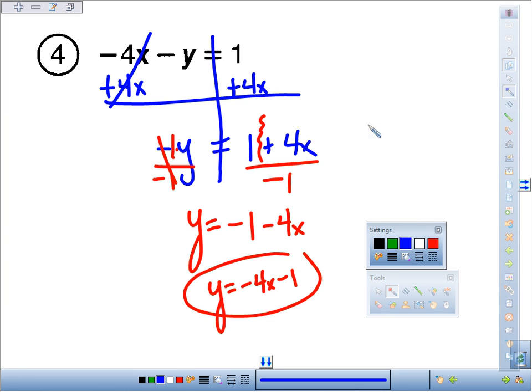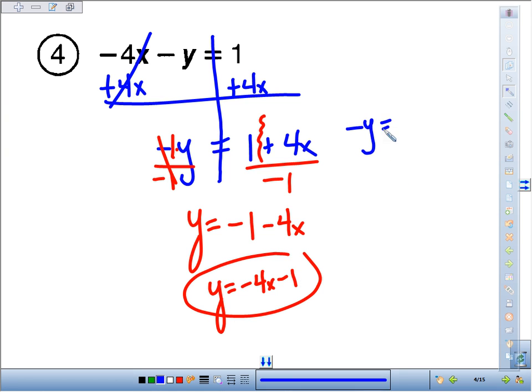Now another way to think about it at the last point in blue, negative y equals 1 plus 4x. You want positive y, so it's kind of like a fence post step. If you flip this side to a positive, you have to flip all the symbols on this side. The positive 1 becomes negative 1, the positive 4x becomes negative 4x, and again, you could simplify by putting the variables first, negative 4x minus 1.